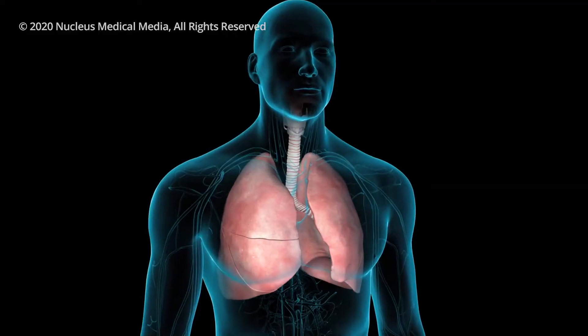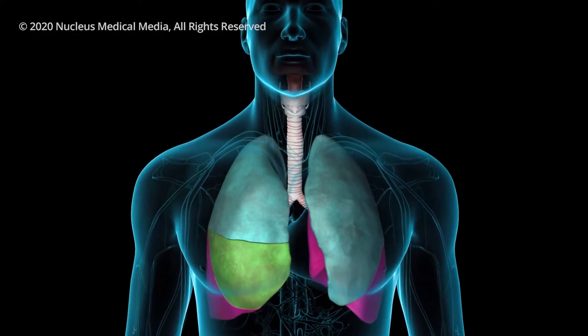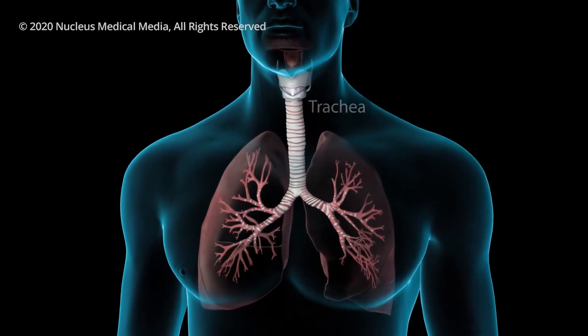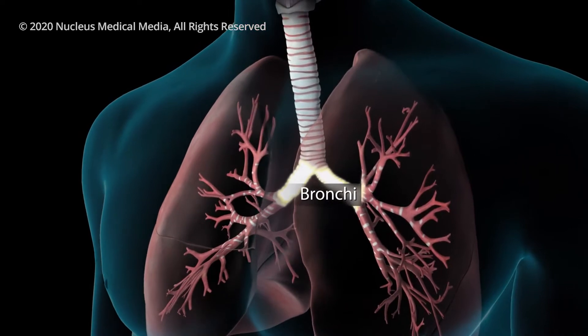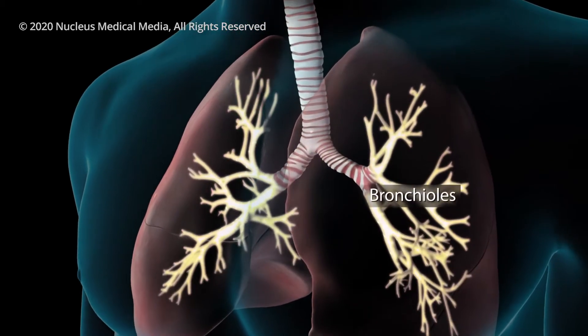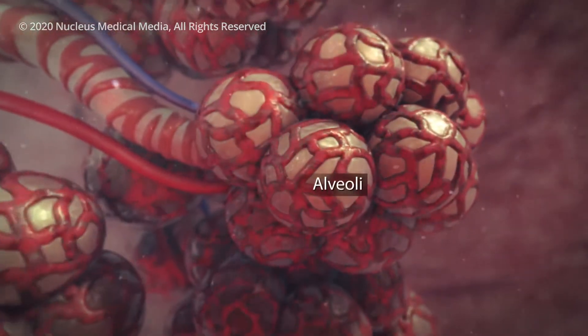For this, we'll have to look into your lungs. Each lung has separate sections called lobes. Normally, as you breathe, air moves freely through your trachea or windpipe, then through large tubes called bronchi, through smaller tubes called bronchioles, and finally into tiny sacs called alveoli.